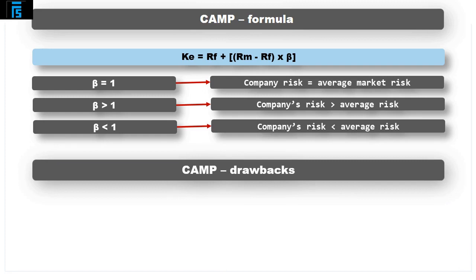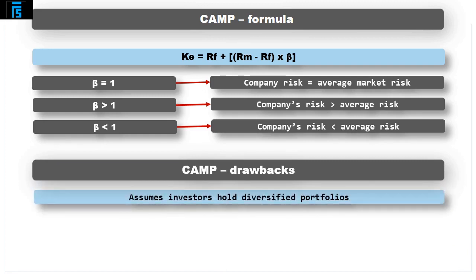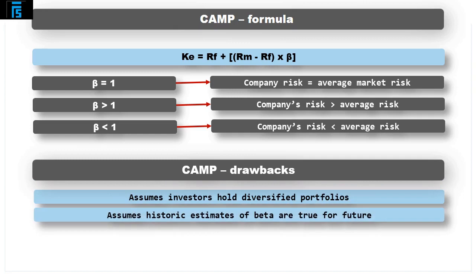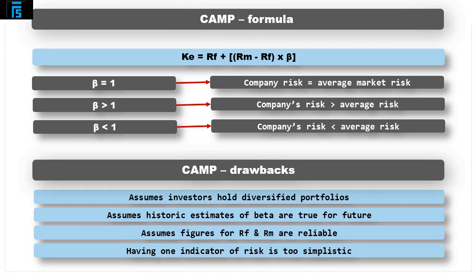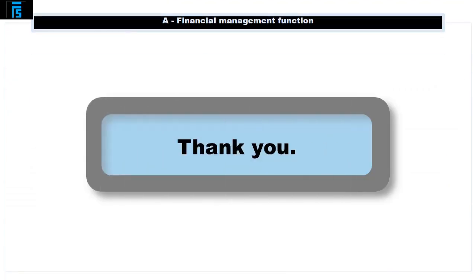The drawbacks of CAPM are: it assumes that all investors hold diversified portfolios; it assumes that the historic risk relationship estimated by the beta holds true moving forward; it assumes that reliable figures for RF and RM can be established. In practice, the return on government stocks is often taken as an indicator of risk-free. Finally, it can be argued that having only one indicator of risk is too simplistic. Thank you.